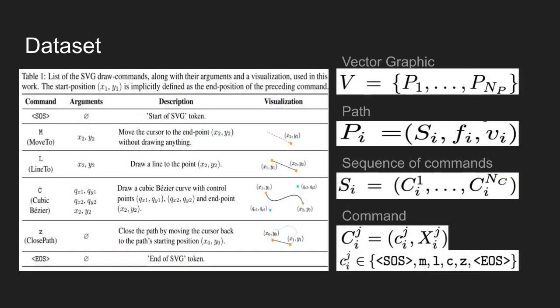A list of draw commands is shown in the table. Each vector graphics image V is defined as a set of n paths P, where each path P is defined as a triplet S, F, and V. V indicates the visibility of the path, F determines the fill property, and S contains a sequence of n commands C, where command C itself is defined by its type and arguments as listed in the table.